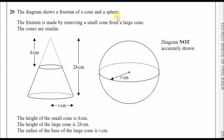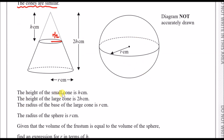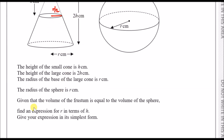Question 20. The diagram shows a frustum of a cone and a sphere. The frustum is made by removing a small cone from a large cone, and the cones are similar — they are proportionally different. The small cone has height h and the large cone has height 2h, so the scale factor is 2. This means the radius of the large cone is r and the radius of the small cone is r over 2. We need to find an expression for r in terms of h, given that the volume of the frustum equals the volume of the sphere.